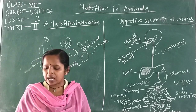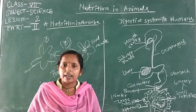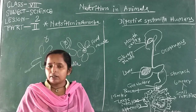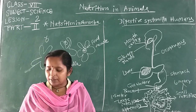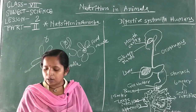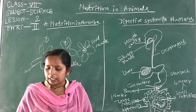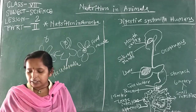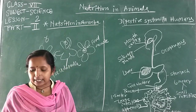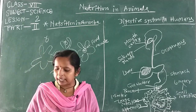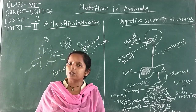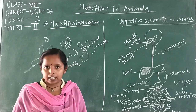In this way, amoeba ingests food, and with the help of digestive juices or enzymes, digestion of the ingested food occurs in the food vacuole. The digested food is then absorbed into the cytoplasm, and the undigested food material is removed from the body through a temporary opening.